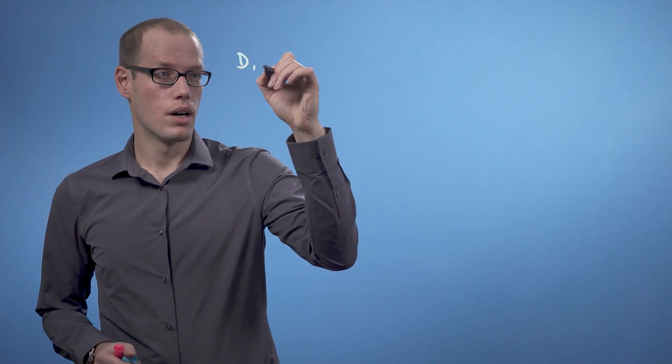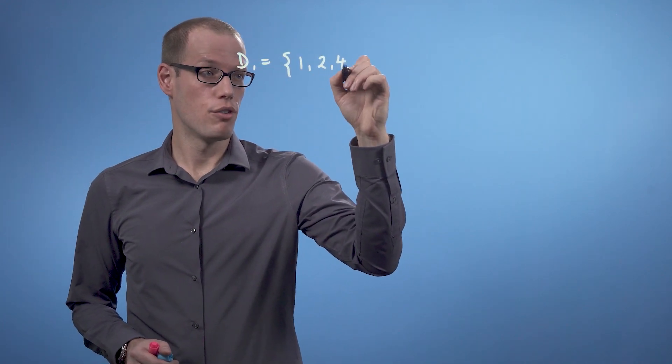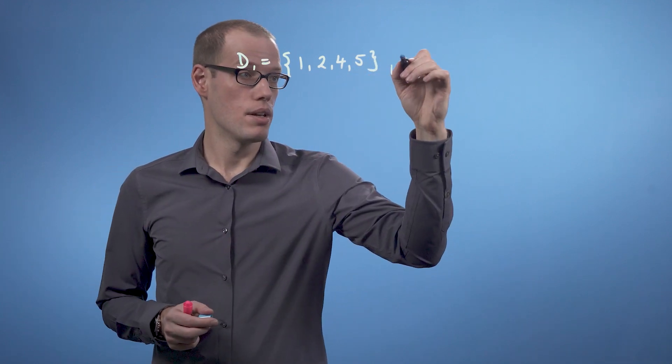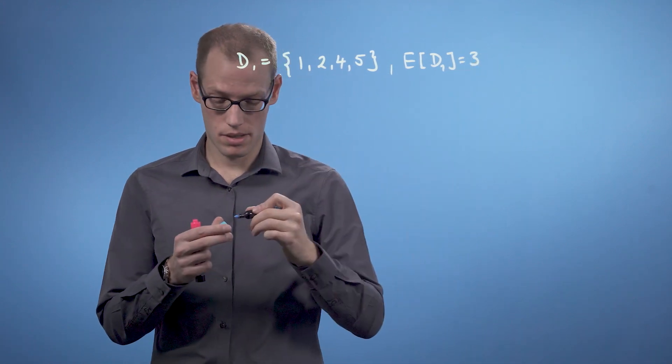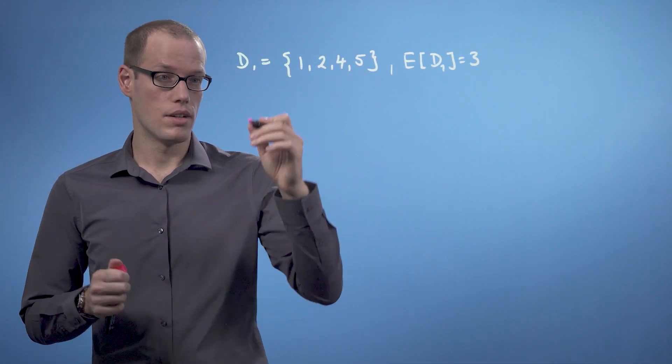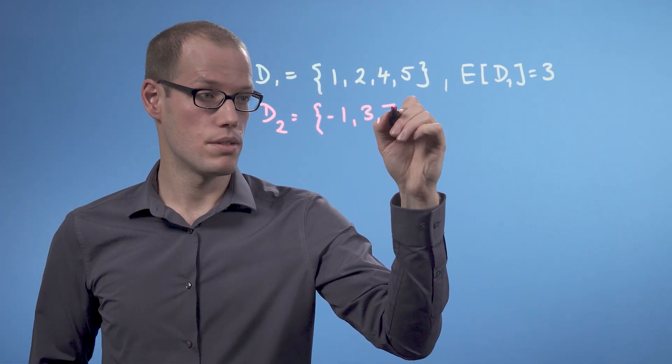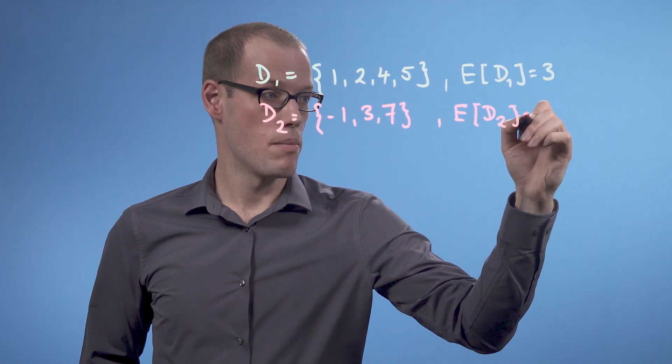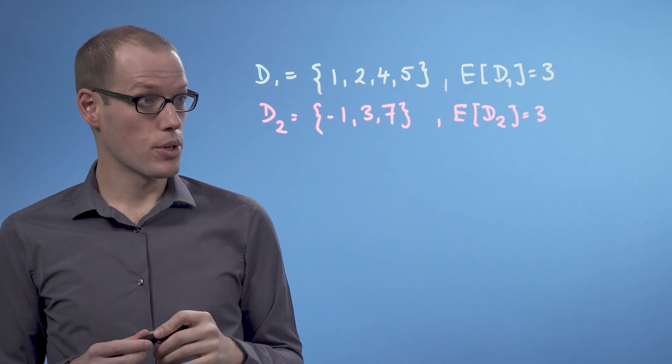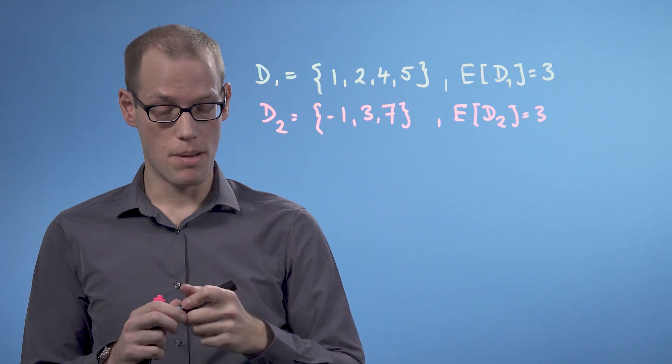Okay, let us do this for D1 and D2. So D1 was 1, 2, 4, and 5, and the mean value or expected value of D1 was 3, and D2 was minus 1, 3, and 7 with exactly the same mean value. So now we want to compute the average square distance of D1 from the mean and from D2 from the same mean.